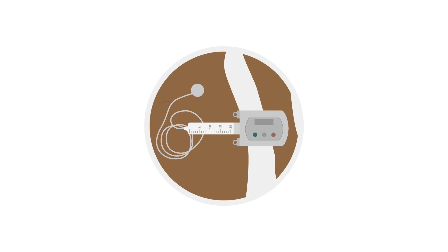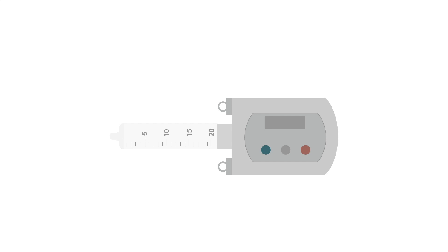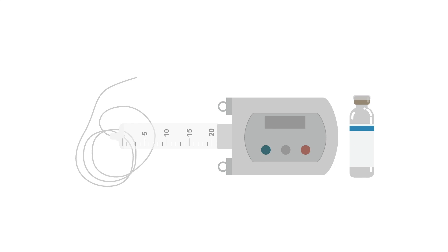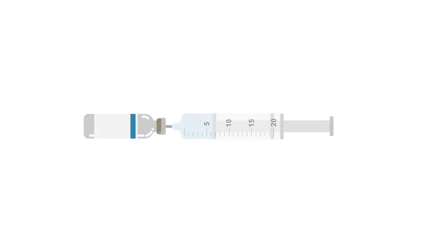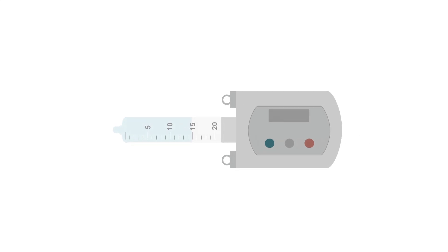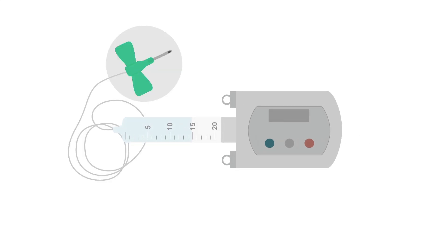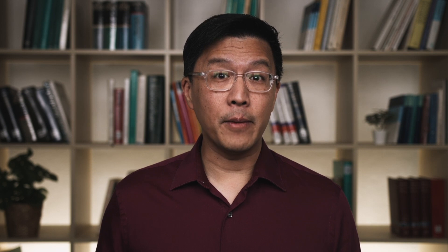For CSAI, you'll generally need the pump with a syringe or reservoir, medication, line or tubing, and an adhesive needle. The syringe is filled with medication and then connected to the pump and tubing. Programming for the pumps varies. There is a continuous rate that changes automatically at different points of the day and night, and a bolus dose that can be given for motor fluctuations or off periods.